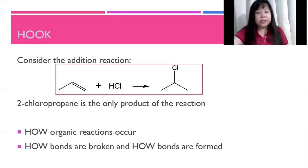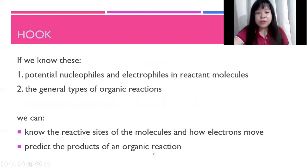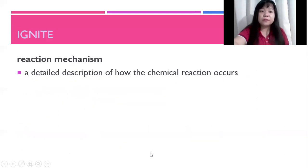To do that, we would have to know first how organic reactions occur, how bonds are broken, and how bonds are formed. So that would be addressed by this module. We would have to learn how bonds are broken and how bonds are formed in order to more specifically predict the products of an organic reaction.